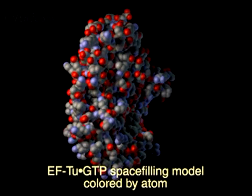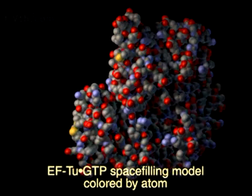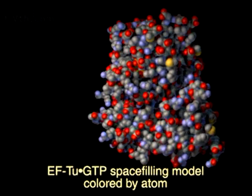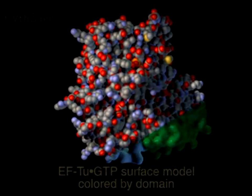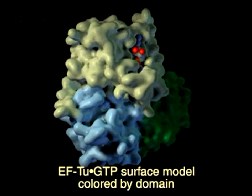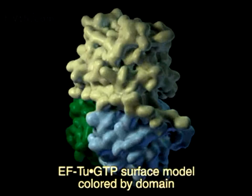Elongation factor Tu has three domains, which are compactly arranged in its GTP-bound state. Here, we show the surface of the protein with each of its domains in a different color.